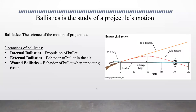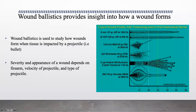When a bullet enters the body, it crushes and shreds any tissue in its path and a wound is eventually formed. By using wound ballistics, we are able to understand how these wounds form when different projectiles shot from different firearms impact human tissue. Wound ballistics has also helped us understand that the appearance of a wound depends on the firearm used, the type of projectile, and its velocity.